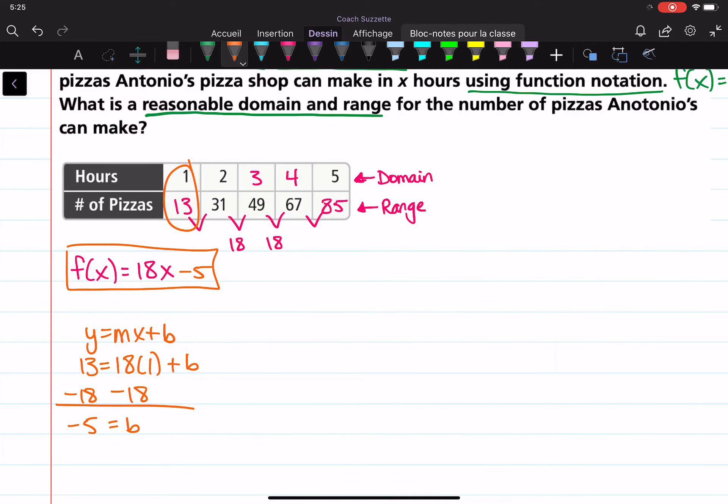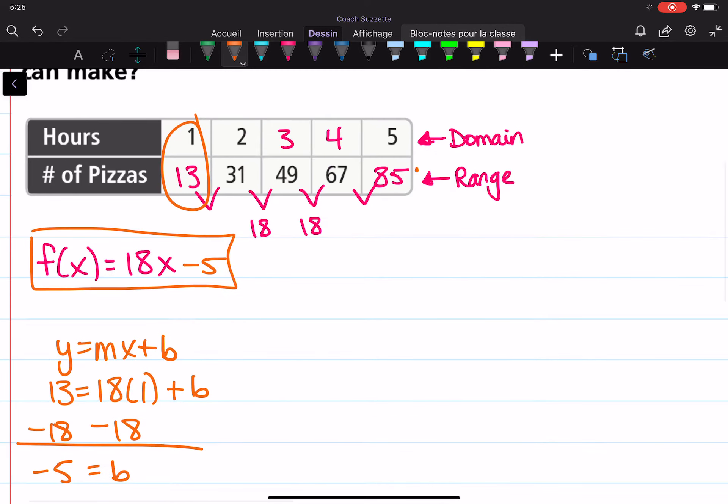However, negative 5 is nowhere here. In zero hours they can make negative 5 pizzas. That doesn't make sense in this context. That's why the range starts at 13.